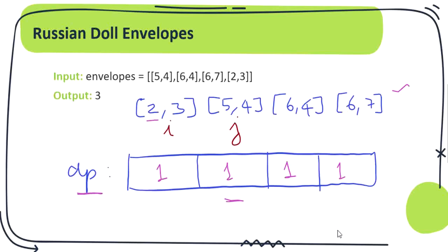We have two pointers: i starts at the first element and j starts at the second envelope. Moving on to checking whether we can put, at j — that is 5,4 — how many envelopes fit till that point. We have only one envelope before 5,4, which is 2,3. We check whether we can put 2,3 into 5,4 — yes, because both height and width are greater. So at j=5,4, the answer is 1 (for 2,3) plus 1, giving us 2.